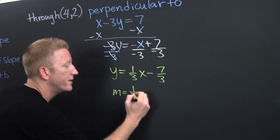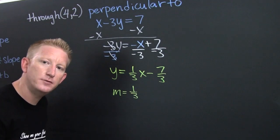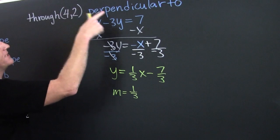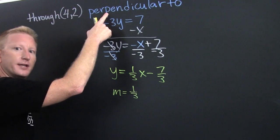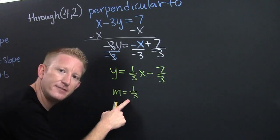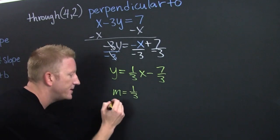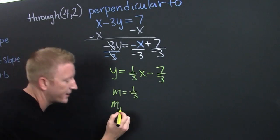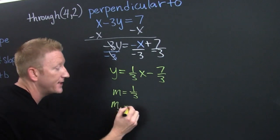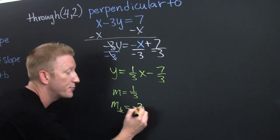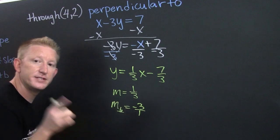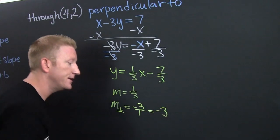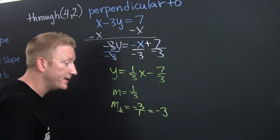The slope is one-third. But since I'm trying to find the equation of a line that's perpendicular, I need the negative reciprocal of this. So the perpendicular slope is going to be negative three over one. That's the negative reciprocal — but I'm not going to leave it like that, I'm going to call that negative three.